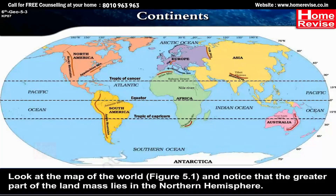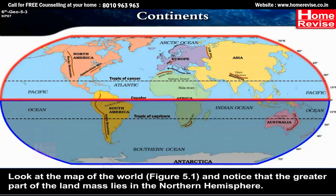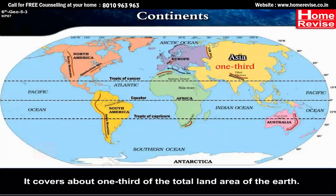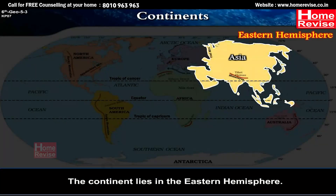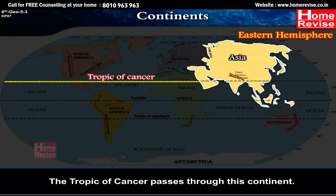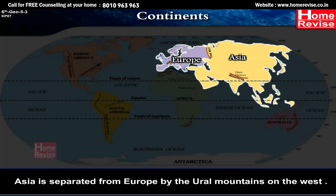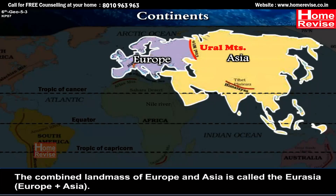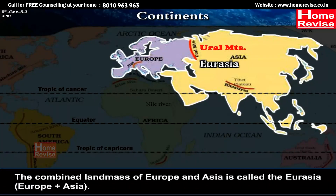Look at the map of the world, figure 5.1, and notice that the greater part of the land mass lies in the northern hemisphere. Asia is the largest continent. It covers about one third of the total land area of the Earth. The continent lies in the eastern hemisphere. The Tropic of Cancer passes through this continent. Asia is separated from Europe by the Ural Mountains on the west. The combined land mass of Europe and Asia is called Eurasia — Europe plus Asia.